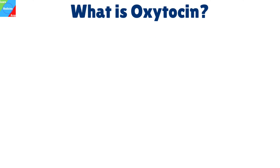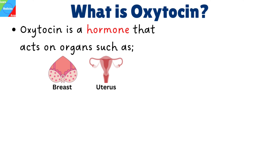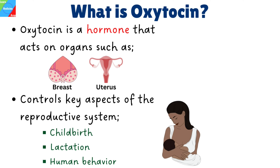Now let's start by first explaining what oxytocin is. Oxytocin is a hormone that acts on organs in the body such as the breast and uterus. It acts as a chemical messenger in the brain, controlling key aspects of the reproductive system, including childbirth and lactation, as well as aspects of human behavior.